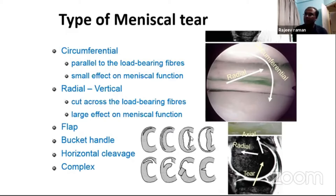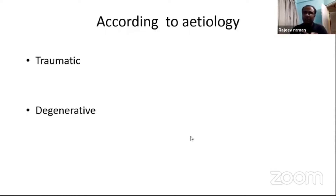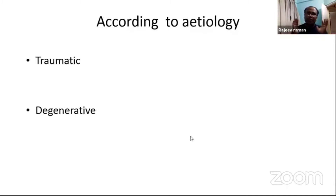The horizontal cleavage and complex tear — these tears are common in degenerative knees, as I will show in the next slide. Normally, if you think about the etiology, it's either a traumatic tear or a degenerative tear. These are the two broad groups in which we divide the etiology of meniscus tear.